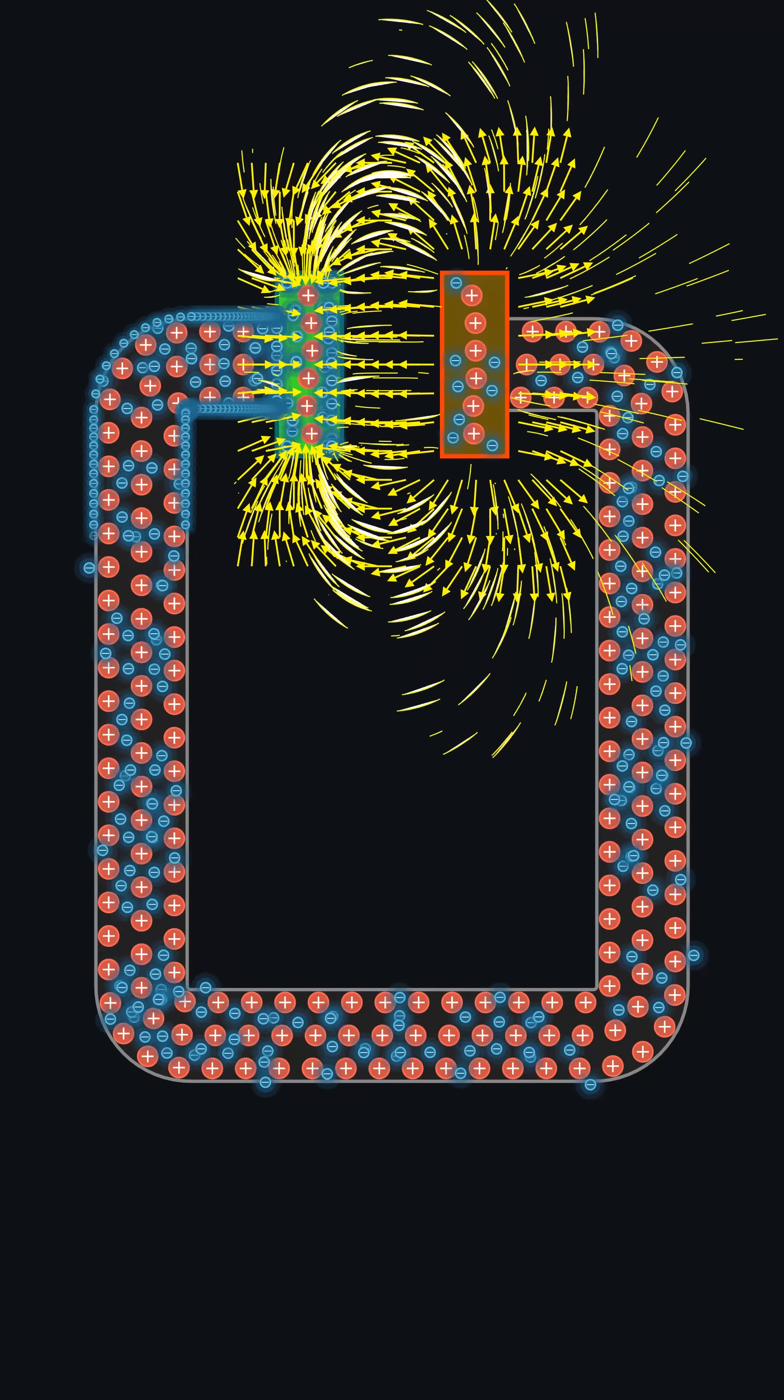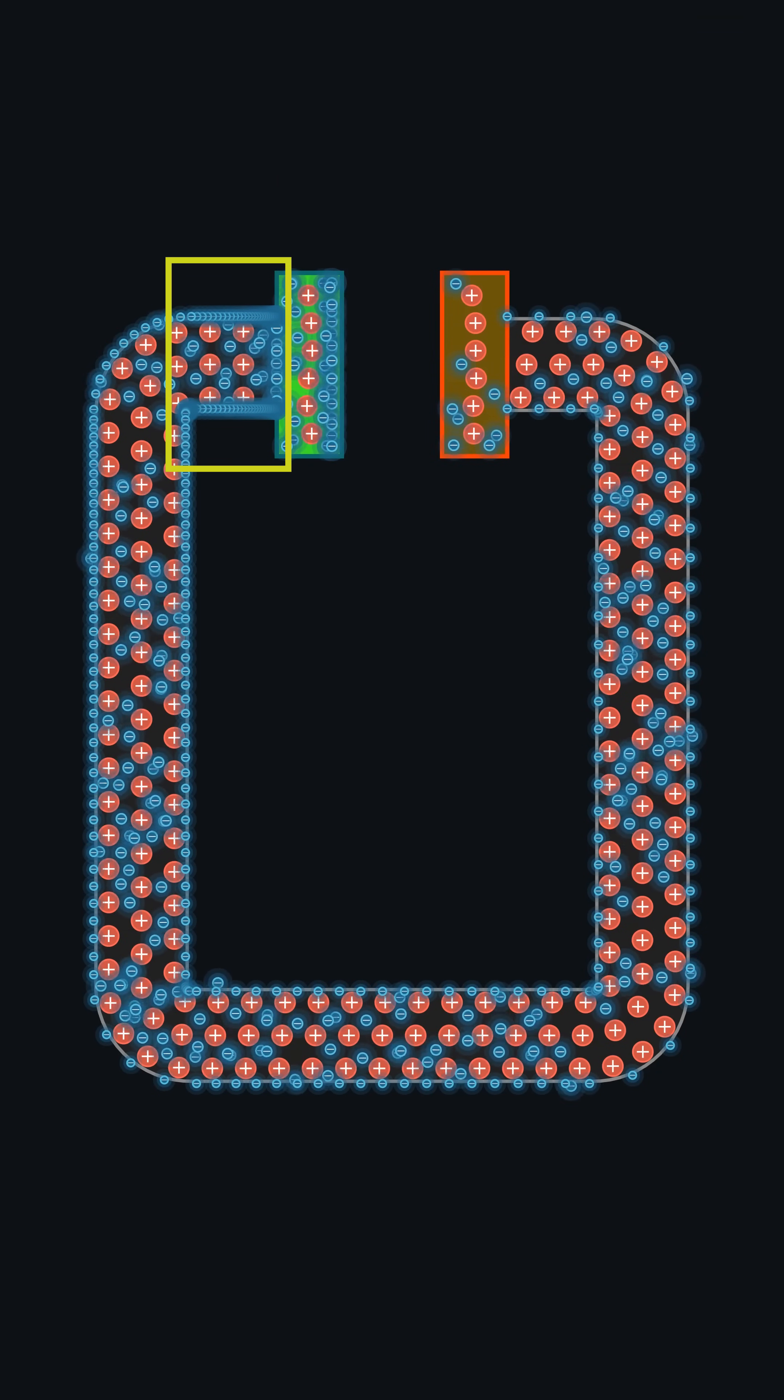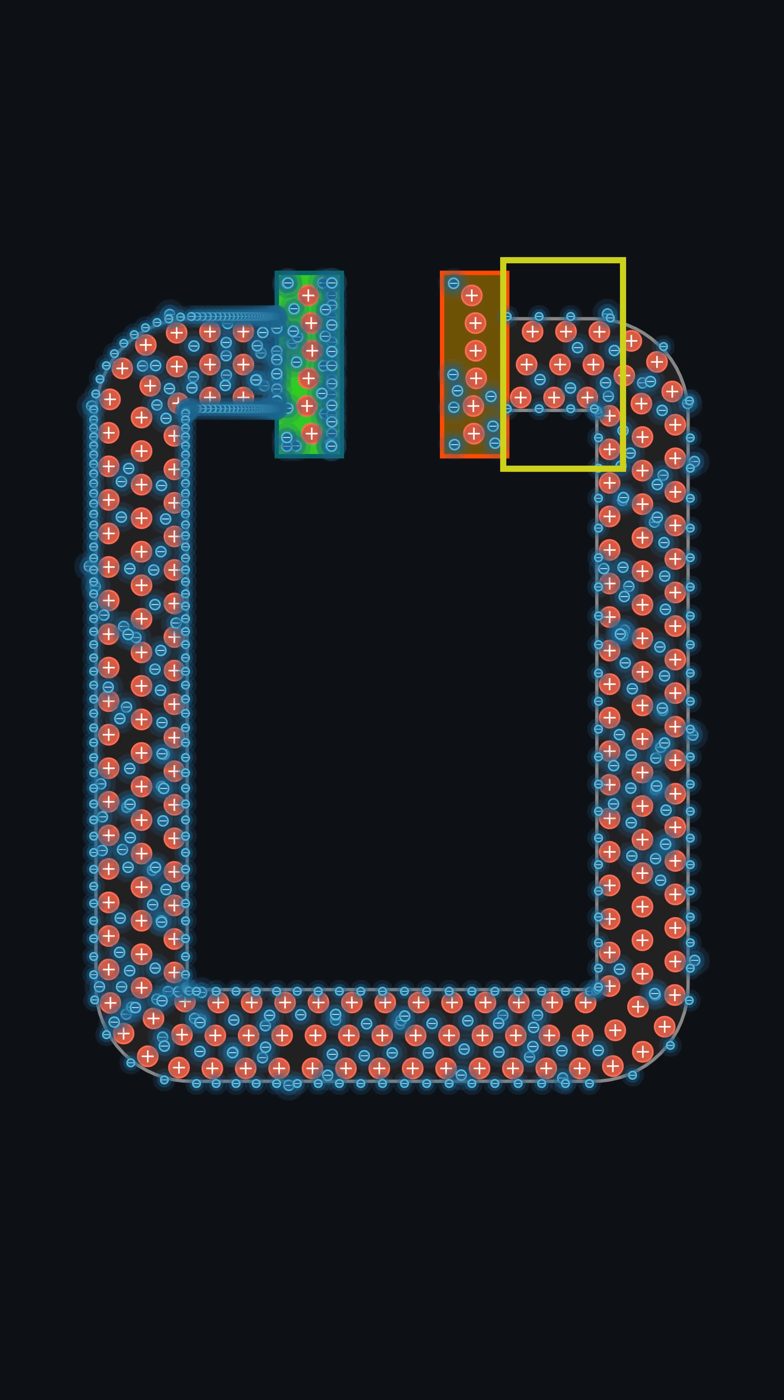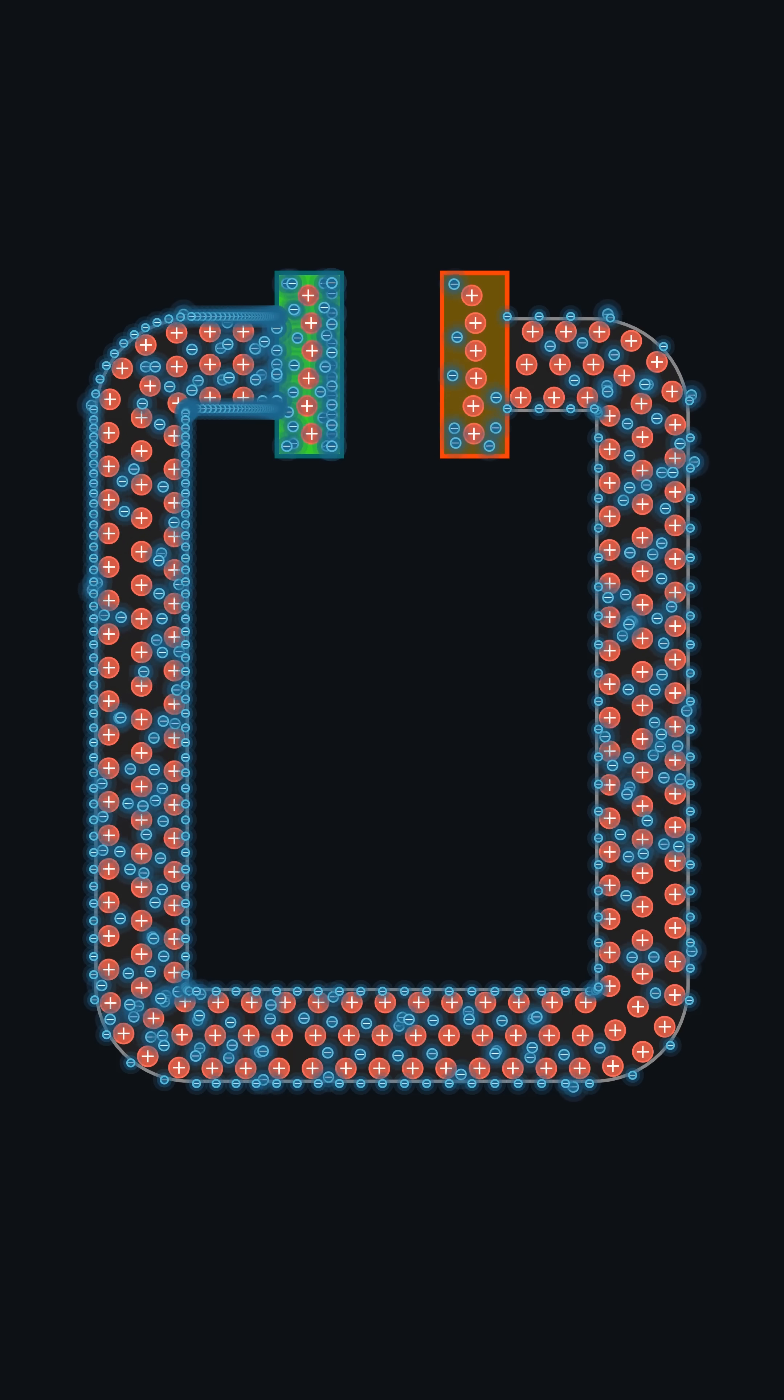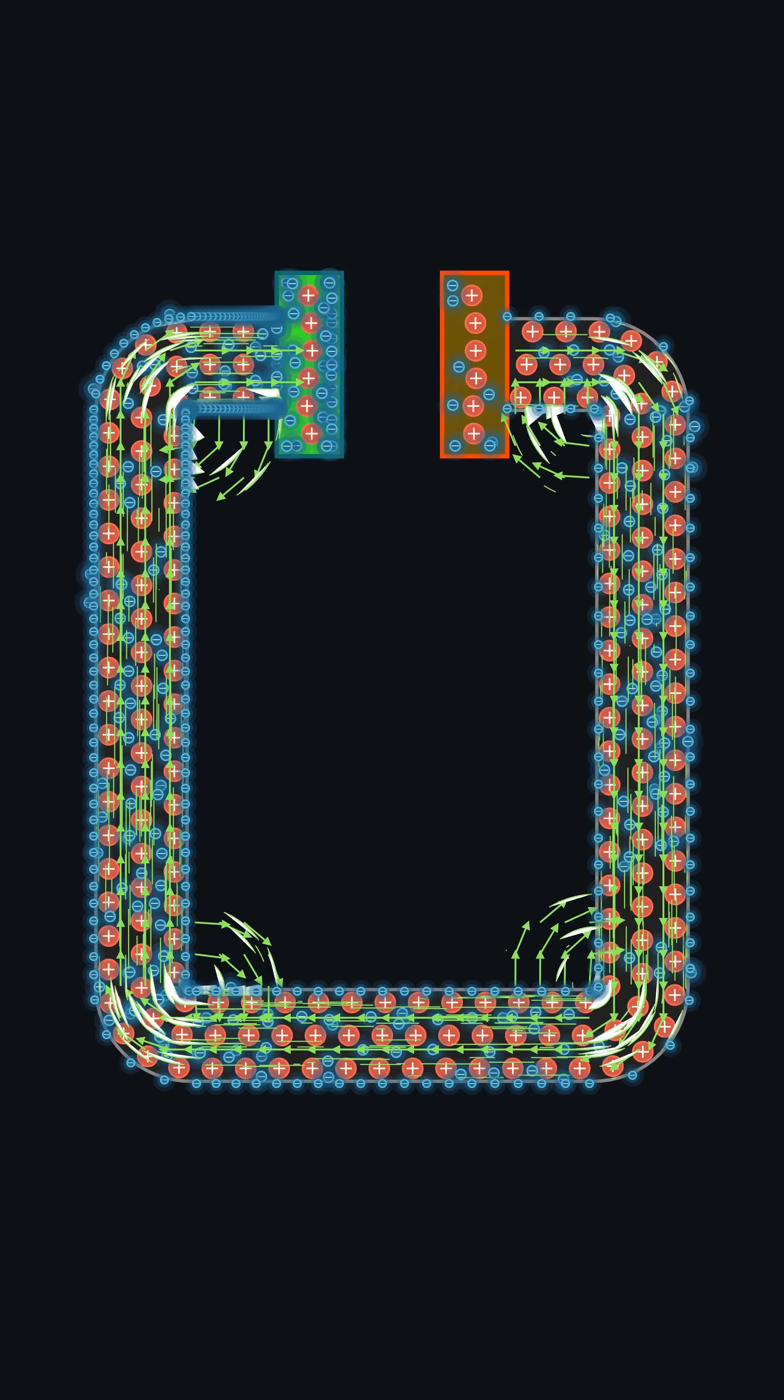A few get pushed towards the surface, spreading unevenly, packed densely near the negative plate and thinly towards the positive one. That imbalance creates something new, a new electric field inside the wire itself.